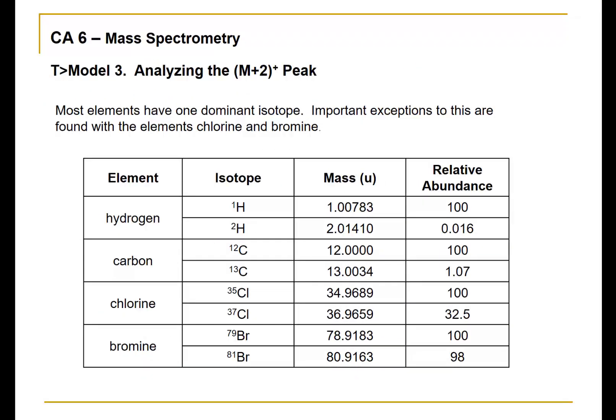In addition to considering the information associated with the M plus peak and the M plus 1 peak, it will be important to look for the presence of an M plus 2 peak. This table shows some information about isotopes of elements that are commonly found in organic compounds.